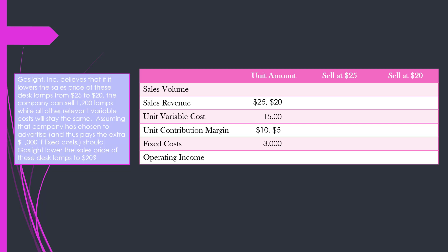If we sell at $25 a piece and we're advertising, our sales volume will be 1,200. If we drop the price down to $20, our sales volume is expected to increase all the way up to 1,900. Selling at $25 with 1,200 units: 1,200 × $25 = $30,000 in sales revenue. Those 1,200 units at $15 each in variable costs means $18,000 in variable manufacturing costs, leaving a contribution margin of $12,000. After paying our $3,000 in fixed costs, our operating income is $9,000 — the same numbers we had on the prior slide.